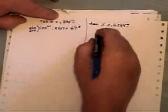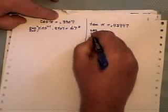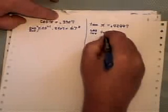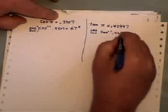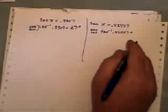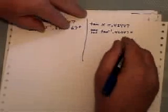On this side, if I hit my second or inverse and tan button, with 0.42447 there, out pops 23 degrees.